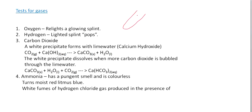The test for oxygen gas: if we have a test tube containing oxygen gas and we insert a glowing splint — just a small piece of wood that is glowing red hot — it will relight. So oxygen gas relights a glowing splint.